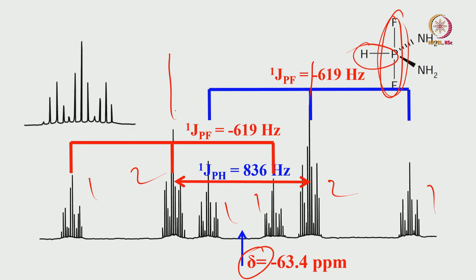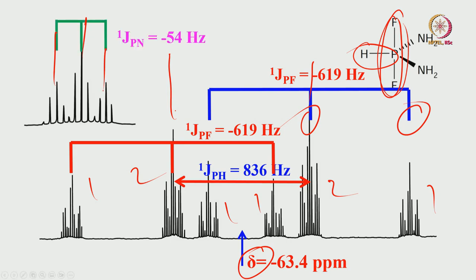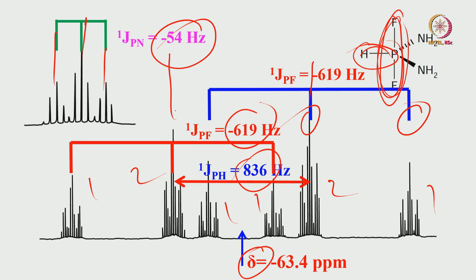Further, the phosphorus also experiences coupling with two nitrogen atoms. Each line of these triplets is further split into a triplet because of two nitrogens with equal coupling to phosphorus. As a consequence, you get a triplet pattern from the phosphorus-nitrogen coupling, about 54 Hz — quite large. So each triplet became another triplet, and that is what is expanded here. I have shown one of them to illustrate the one-bond PN coupling and the two equivalent PN couplings making it a triplet.